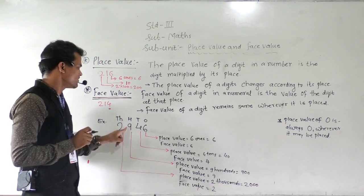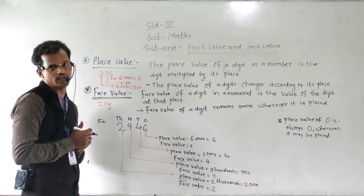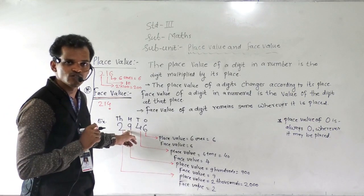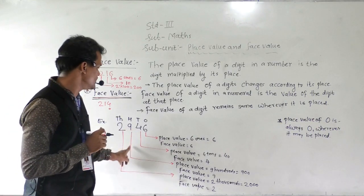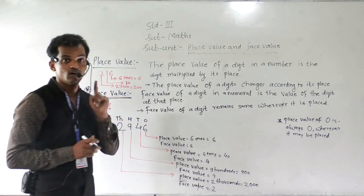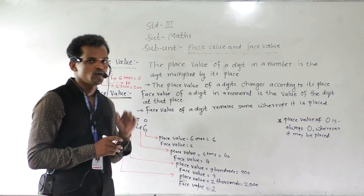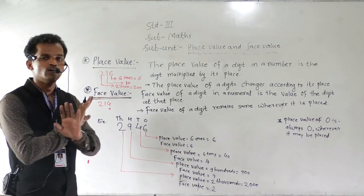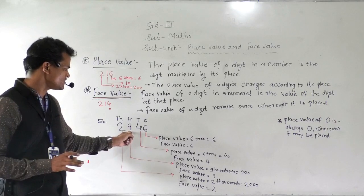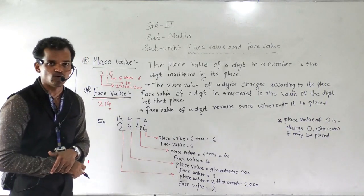Then this 9 comes at the hundreds place, so 9 multiplied by 100 equals 900 — that is the place value of this 9. And the face value doesn't change — it looks like 9, so face value of this 9 is 9 only.